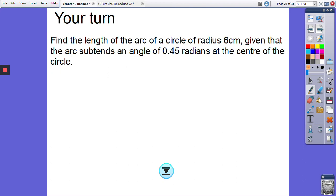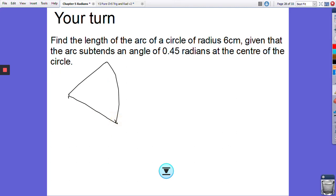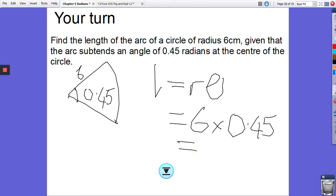Hopefully you've had time to pause and have a go, but this is what you should have got. You should have 6 here, 0.45 is the angle there. And then again, L equals R theta, which is 6 times 0.45, which equals 2.7 centimeters. And Bob's your uncle.